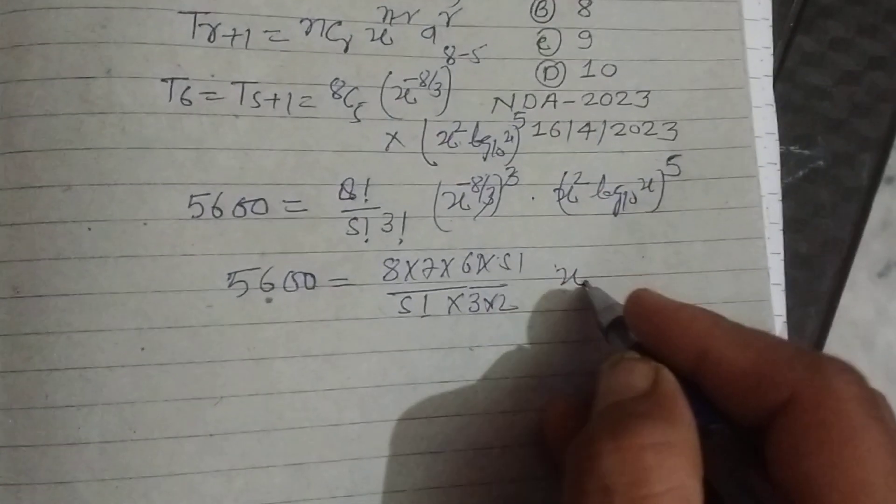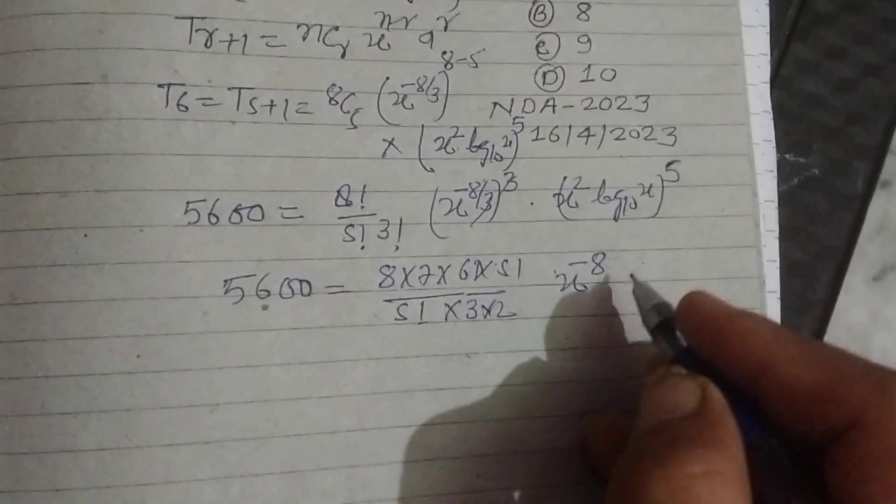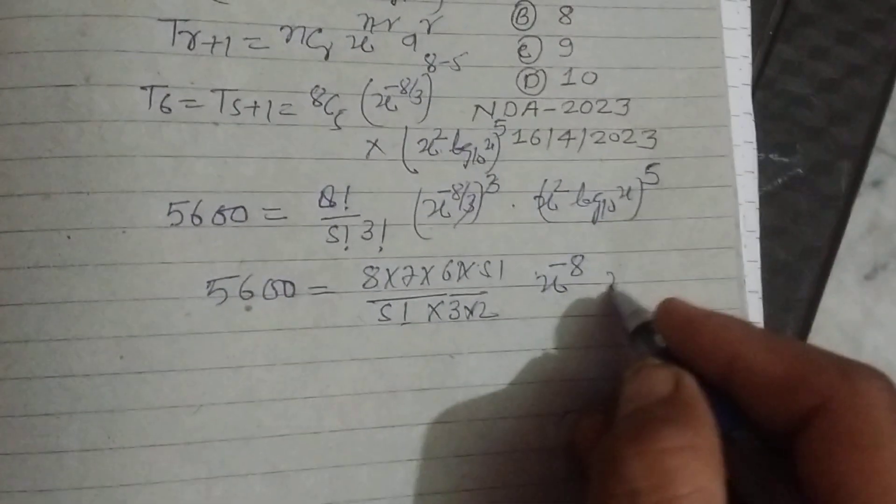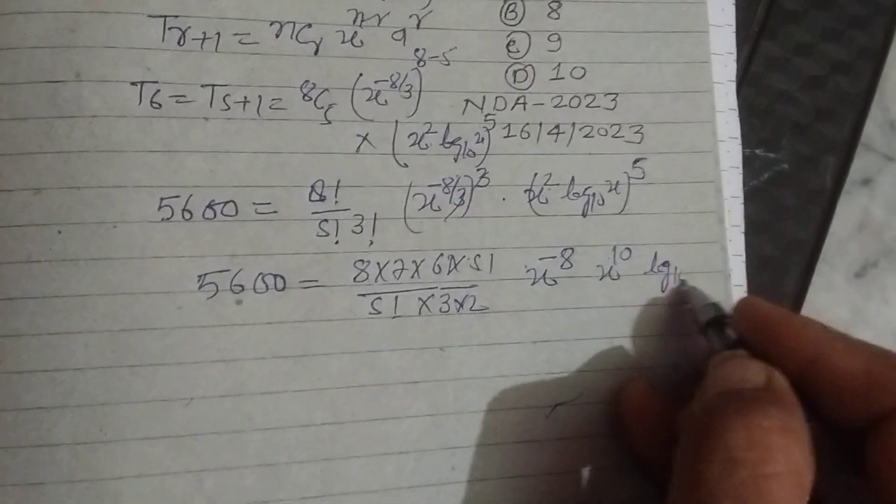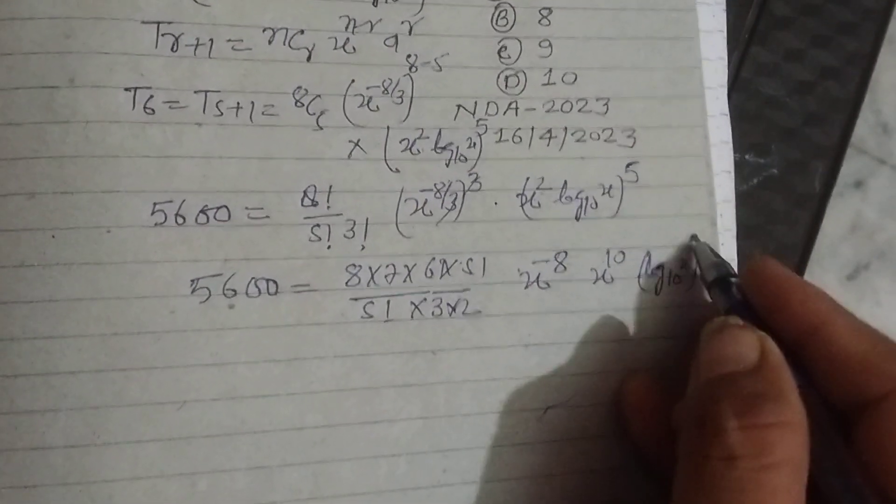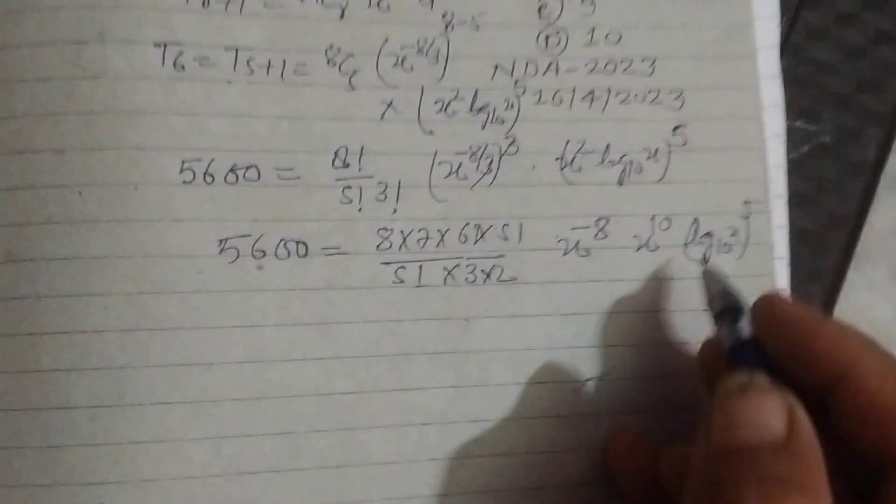This becomes x to the power (-8) and this becomes x to the power 10 log base 10 of x, whole to the power 5.